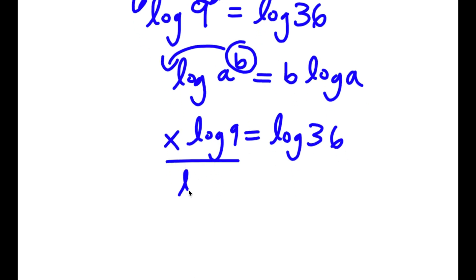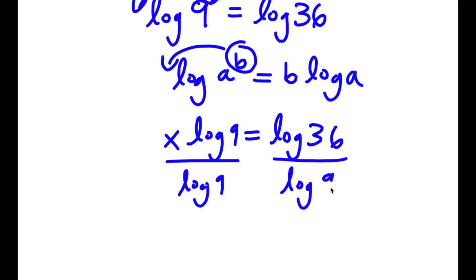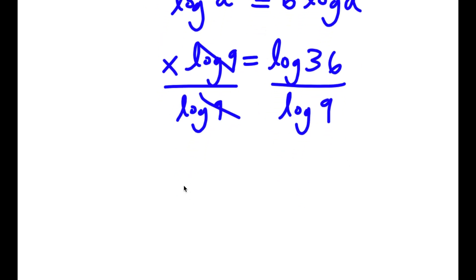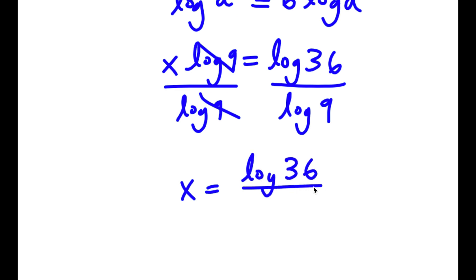Now, if I divide both sides by log 9, these two cancel out, and I have x is equal to log 36 over log 9.